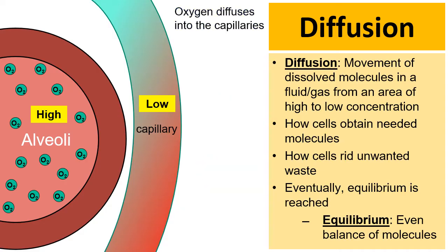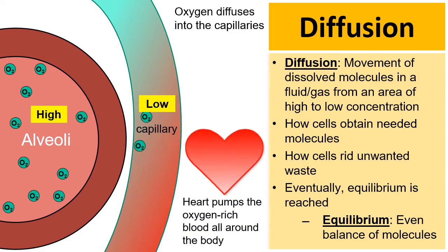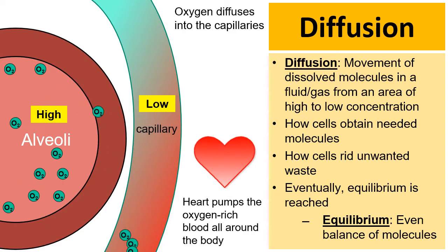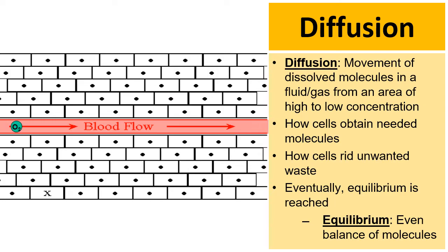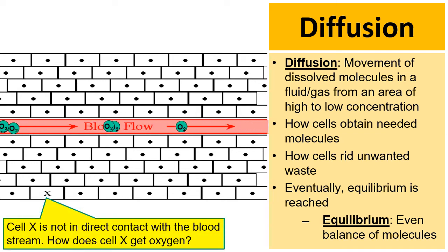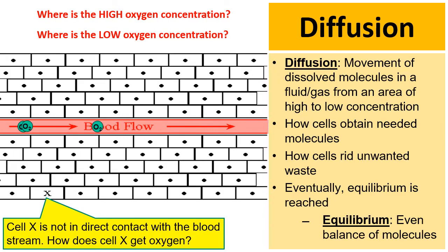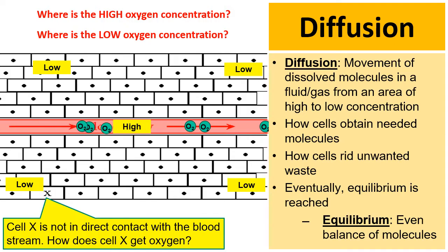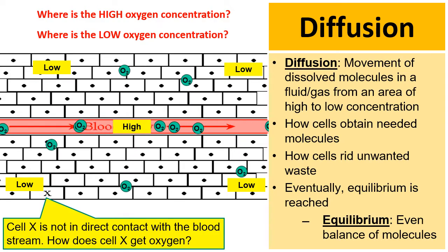Oxygen will diffuse into the capillaries, and then because your heart is beating, it will pump this oxygen-rich blood all around the body. Cell X needs oxygen but is not in direct contact with the blood. The high concentration is in the blood flow and the low concentration is in all the cells surrounding the blood, including cell X. So through diffusion, oxygen diffuses from a high concentrated area to a low concentrated area, and cell X gets its oxygen.